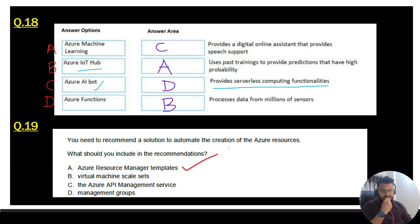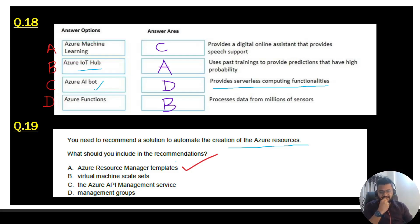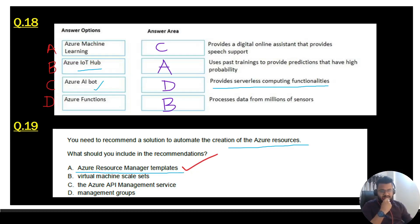Question 19: you need to recommend a solution to automate the creation of Azure resources. You can create resources manually or through an automated process. The correct recommendation is Azure Resource Manager templates, which allow you to create single or multiple Azure resources automatically based on a defined template.